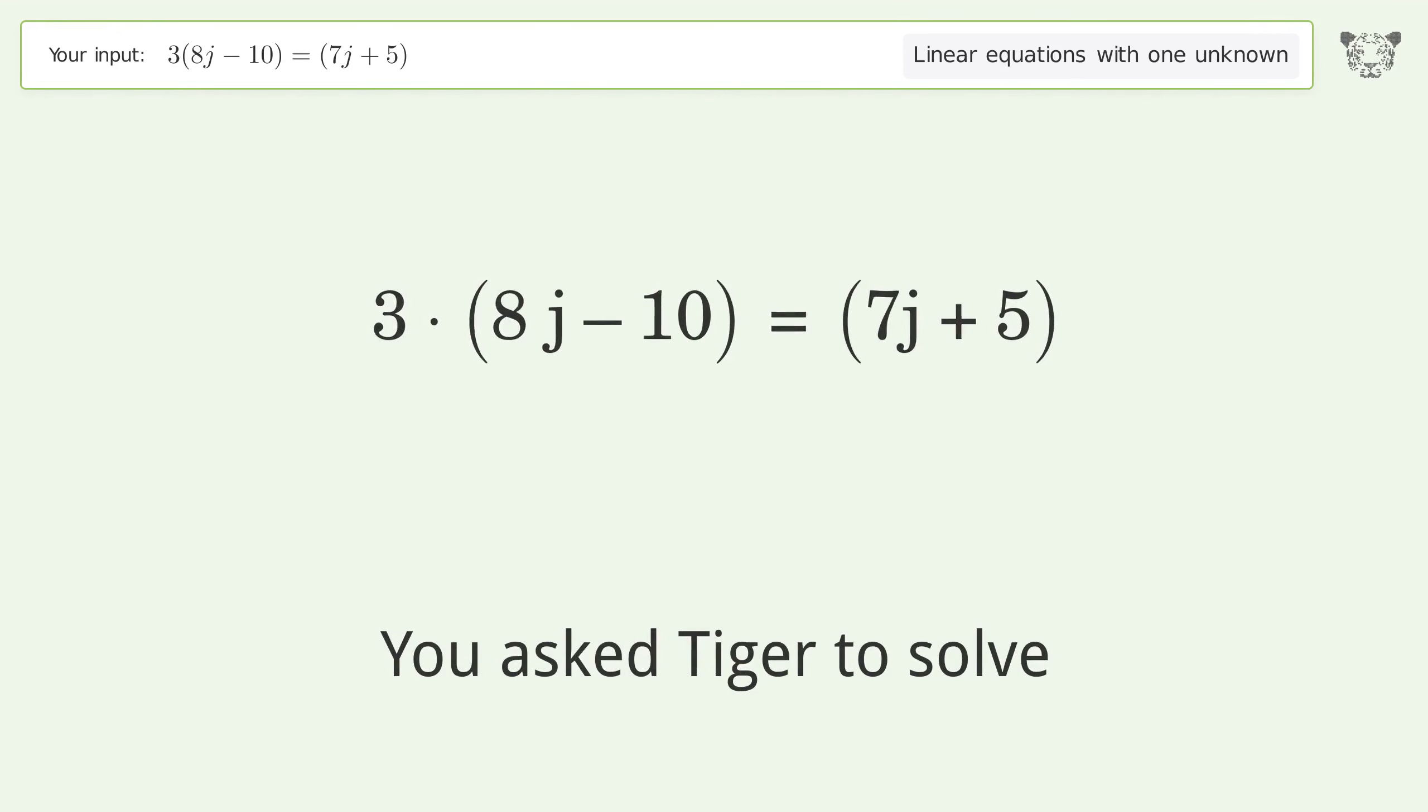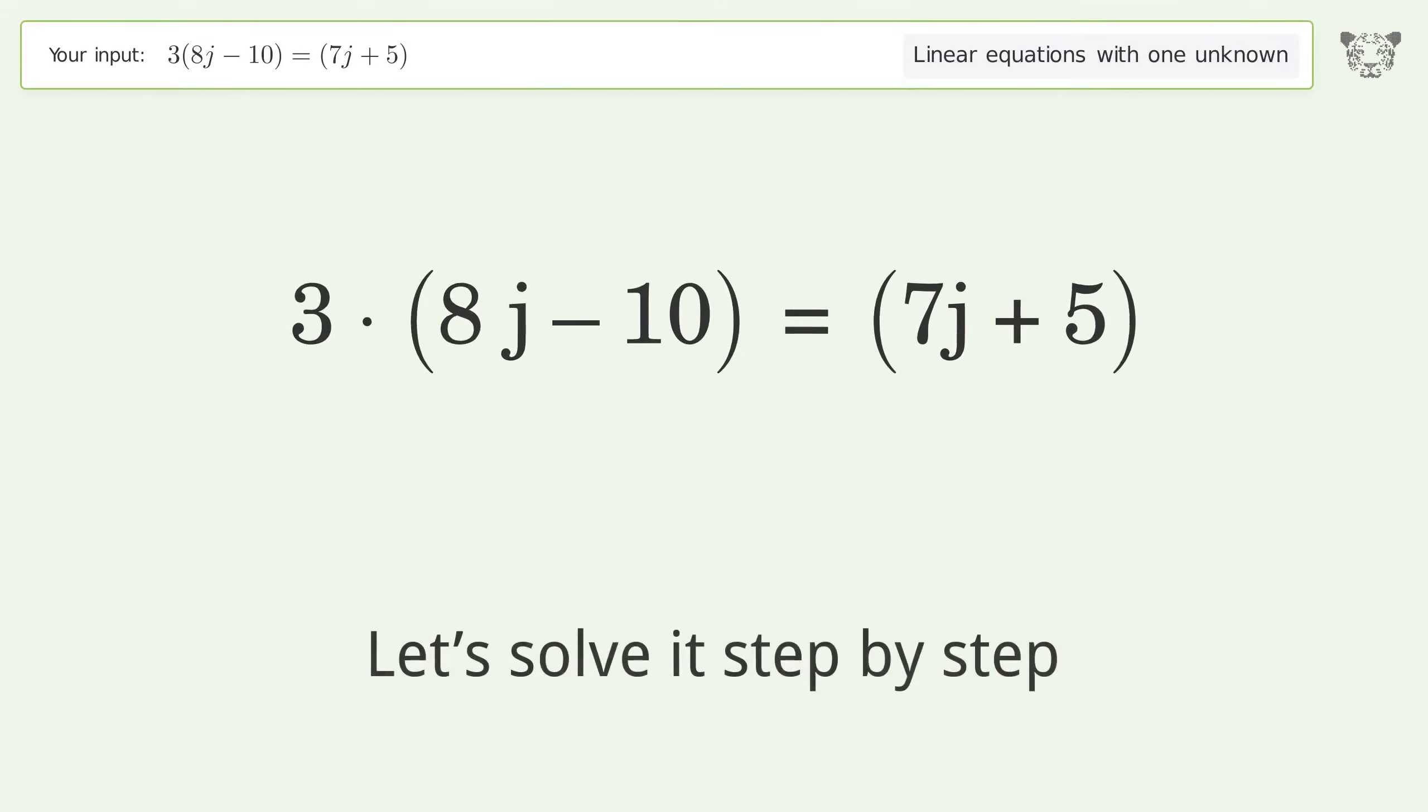You asked to solve this problem, which deals with linear equations with one unknown. The final result is j equals 35 over 17. Let's solve it step by step. Simplify the expression and expand the parentheses.